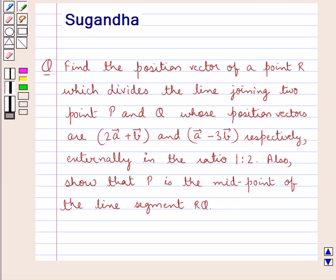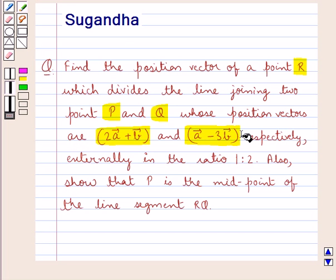Hello and welcome to the session. In this session we discuss the following question: find the position vector of a point R which divides the line joining points P and Q, whose position vectors are 2 vector A plus vector B and vector A minus 3 vector B respectively, externally in the ratio 1 is to 2. Also show that P is the midpoint of the line segment RQ.